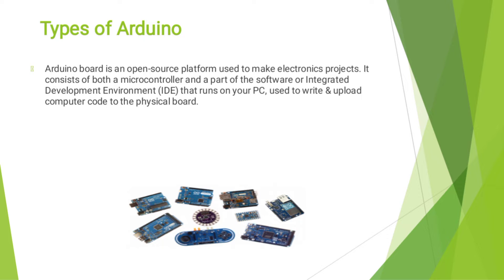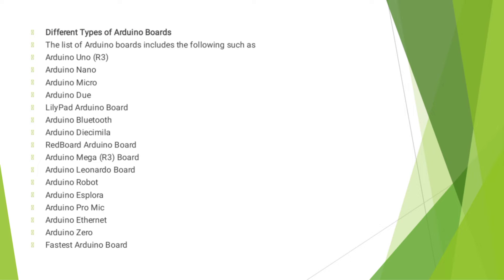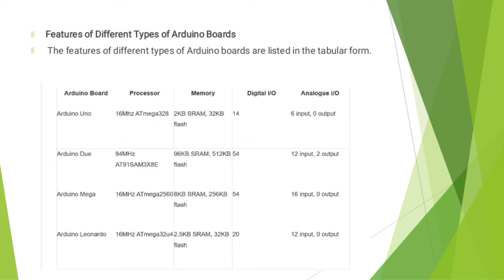This is the diagram that represents the types of Arduino board. The different types of Arduino boards are: Arduino UNO, Arduino Nano, Arduino Micro, Arduino Duo, Lilypad Arduino board, Arduino Bluetooth, Arduino Decimila, Redboard Arduino board, Arduino Mega board, Arduino Leonardo board, Arduino Robot, Arduino Explorer, ProMicro, Arduino Ethernet, and Arduino Zero.